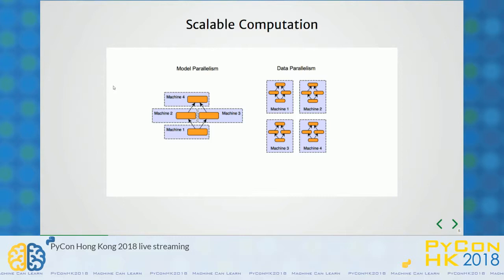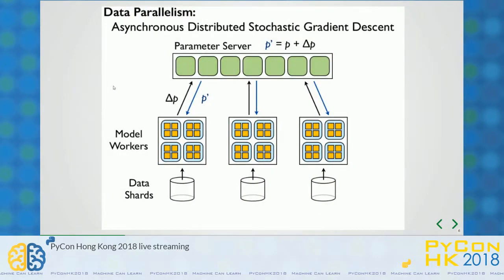Model parallelism is a kind of machine which contains a model that is spread across more than a single machine. We won't be covering that — we will be talking about data parallelism, because it is a better way to compute the model in a distributed system, where we have small individual systems in order to compute that. This is the architecture of data parallelism, where we have data shards as well as individual models.